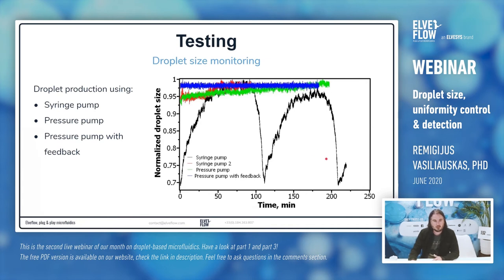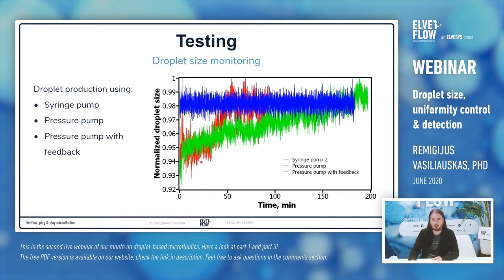We've done tests comparing syringe pump, pressure pump, and pressure pump with feedback. With a syringe pump started immediately, the variation in droplet size is really big — shown by the black line — and this is not optimal. If you wait about two hours for the syringe pump to stabilize, the red line is already much better. But not everyone can wait two hours, especially in labs where droplet production is only 30 to 50 minutes.